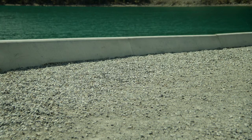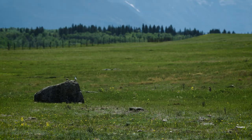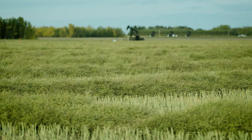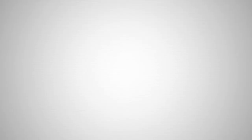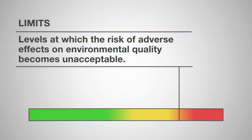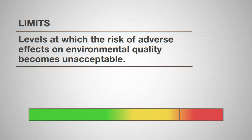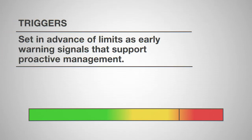And what kind of things go into an EMF? What instruments are on that dashboard? Here are some really important terms to know. A limit is a boundary you don't want to pass — it's the level where the risk of an adverse effect on the environment starts becoming unacceptable. Triggers are like warnings for limits; it's an early warning signal so we can manage the situation proactively.